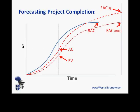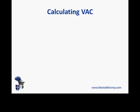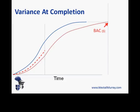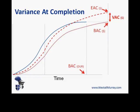So we've just calculated estimates at completion for cost and duration. Something else we need to know is variance at completion, which is budget at completion minus estimate at completion — in other words, the difference between the original estimate and the current forecast cost based on performance to date. If our estimate at completion for dollars is higher than our budget at completion, the variance at completion for dollars is that difference. A positive value is good; a negative value is bad. Similarly, the variance at completion for duration is the difference between the original planned end date and the estimate at completion for duration.